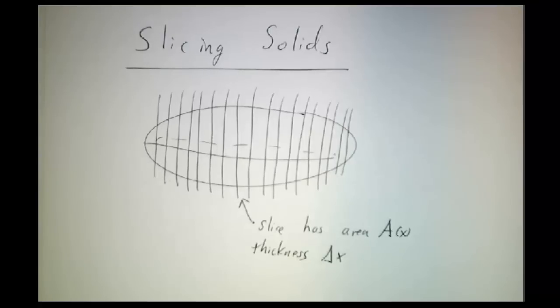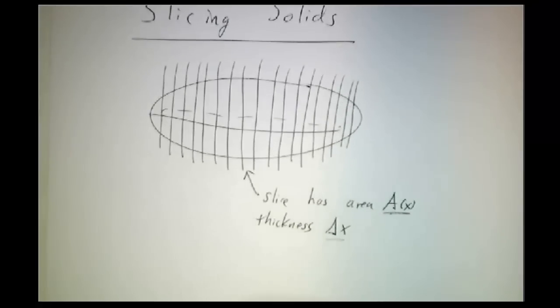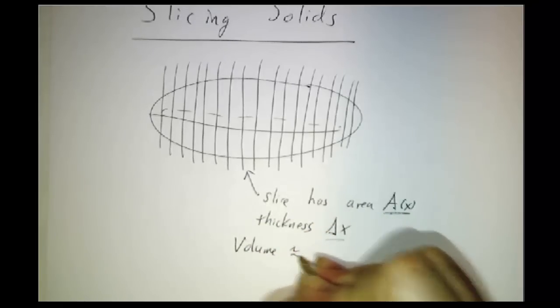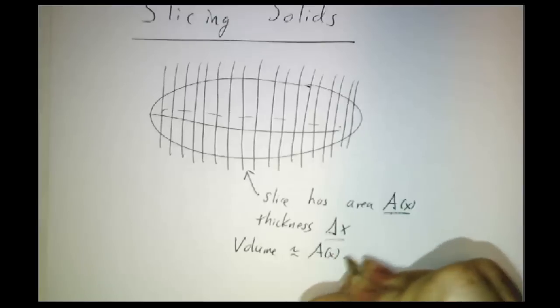There are going to be lots of different cases that we can study, but in general, it's going to have some shape. And if you can figure out the area of the slice, well, a slice that has area A of x and thickness delta x will have volume A of x times delta x.